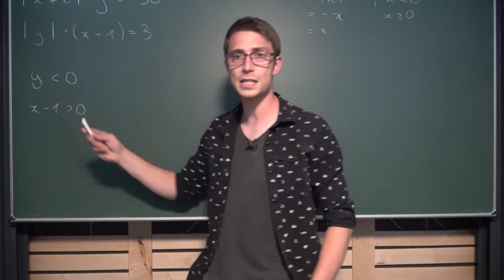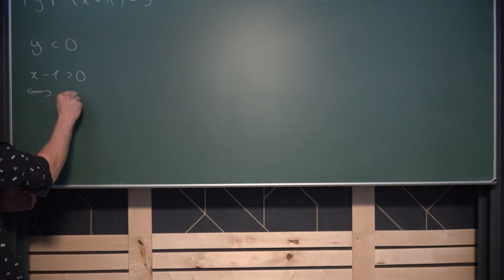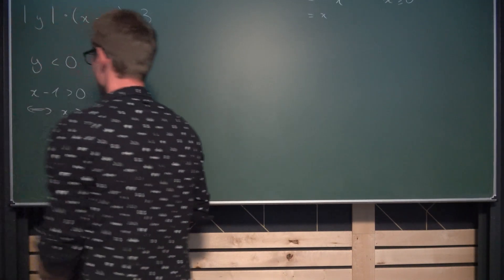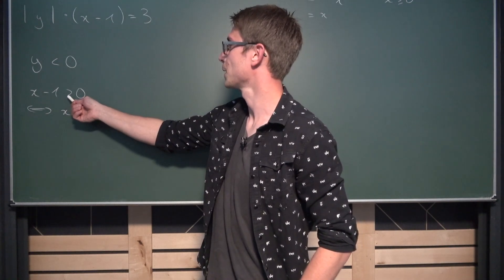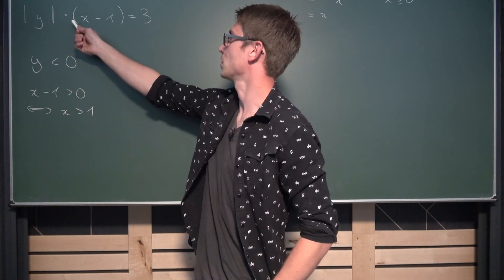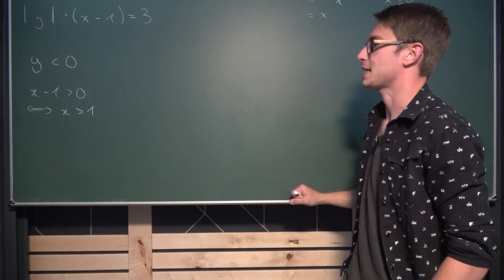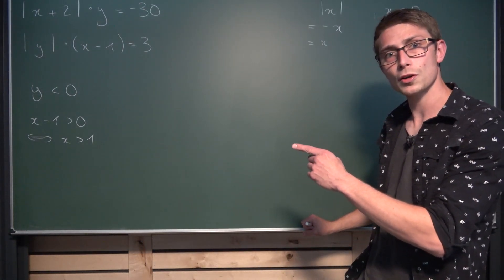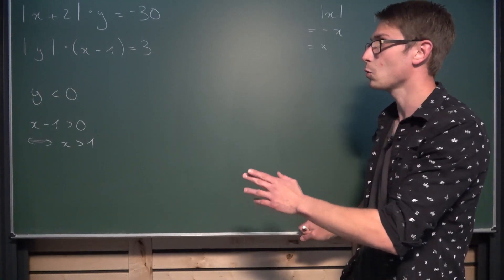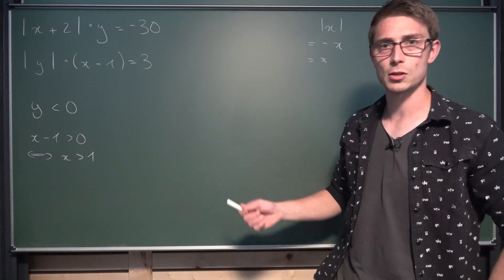And what we can do is we can extract more information from it. Namely, we can say that x must be strictly greater than 1. Also, it's a strict order relation. So we can't have equals here because if we have 0, then multiplying absolute value of y by 0 doesn't yield 3 in any case. So this right here is actually all the case work done. Because now we can go ahead and get started with, for example, the second equation and see what this is going to yield.